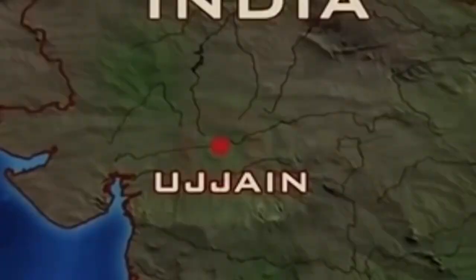Ujjain, India, 1924. Lost pages from an ancient Sanskrit text called the Agustya Samhita are discovered in the city's royal library.